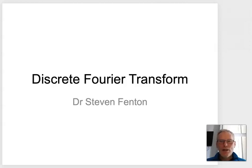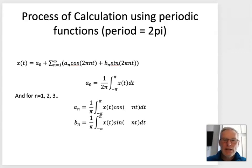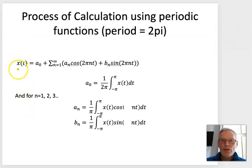I'm going to explain what the Discrete Fourier Transform is and why you shouldn't be scared of it, and why it's so powerful. Fourier gave us this expression which essentially says that any periodic function — here we've got the periodic function x(t) — can be represented by different component parts.